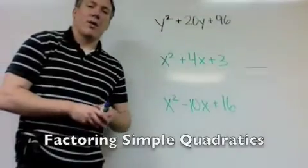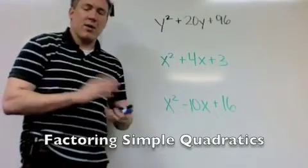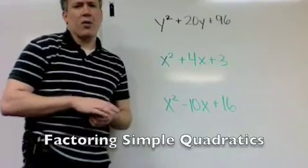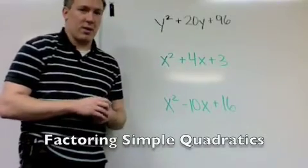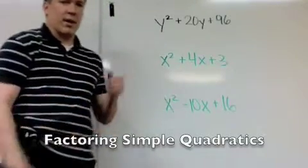Okay, the next kind we're going to factor is quadratics, and these are simple quadratics. We'll get into quadratic form more in Chapter 6, but right now we're going to factor these simple kinds.